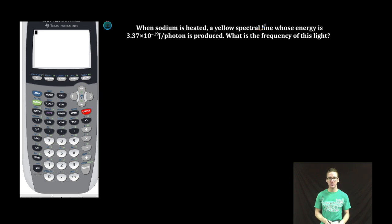When sodium is heated, a yellow spectral line whose energy is 3.37 times 10 to the negative 19 joules per photon is produced. What is the frequency of this light?